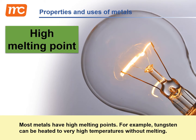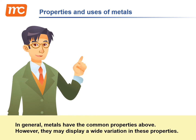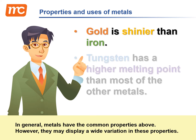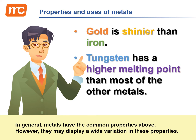Most metals have high melting points. For example, tungsten can be heated to very high temperatures without melting. In general, metals have these common properties. However, they may display a wide variation in these properties. For example, gold is shinier than iron, and tungsten has a higher melting point than most of the other metals.